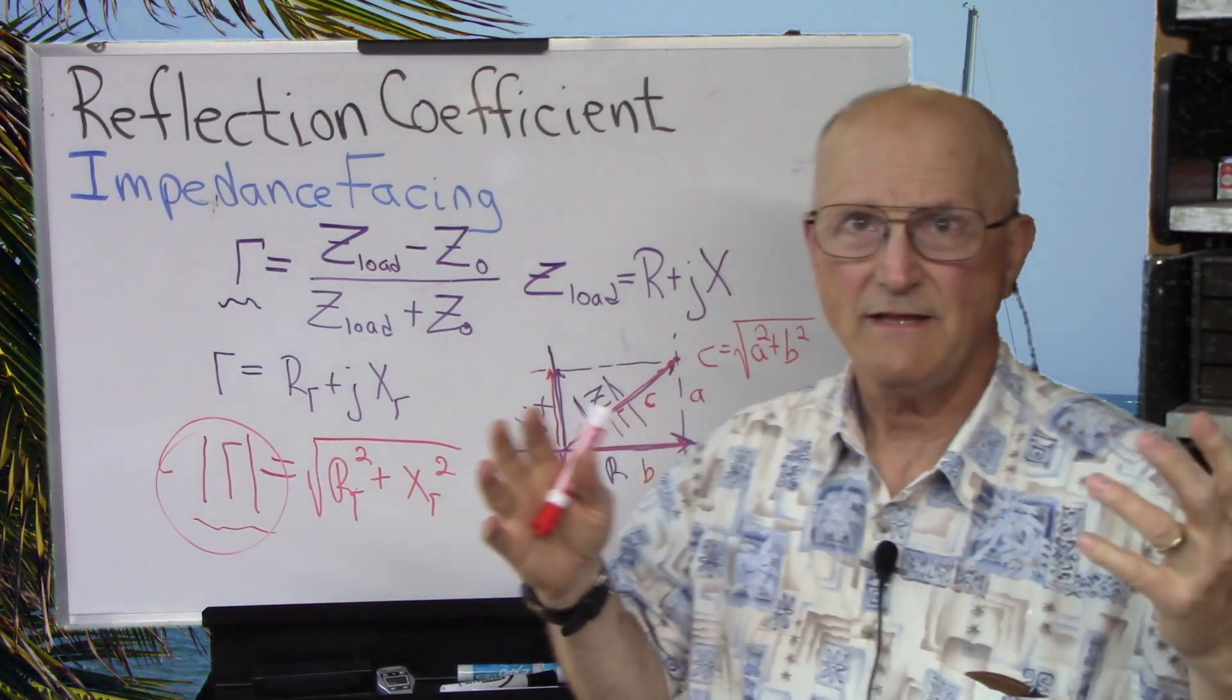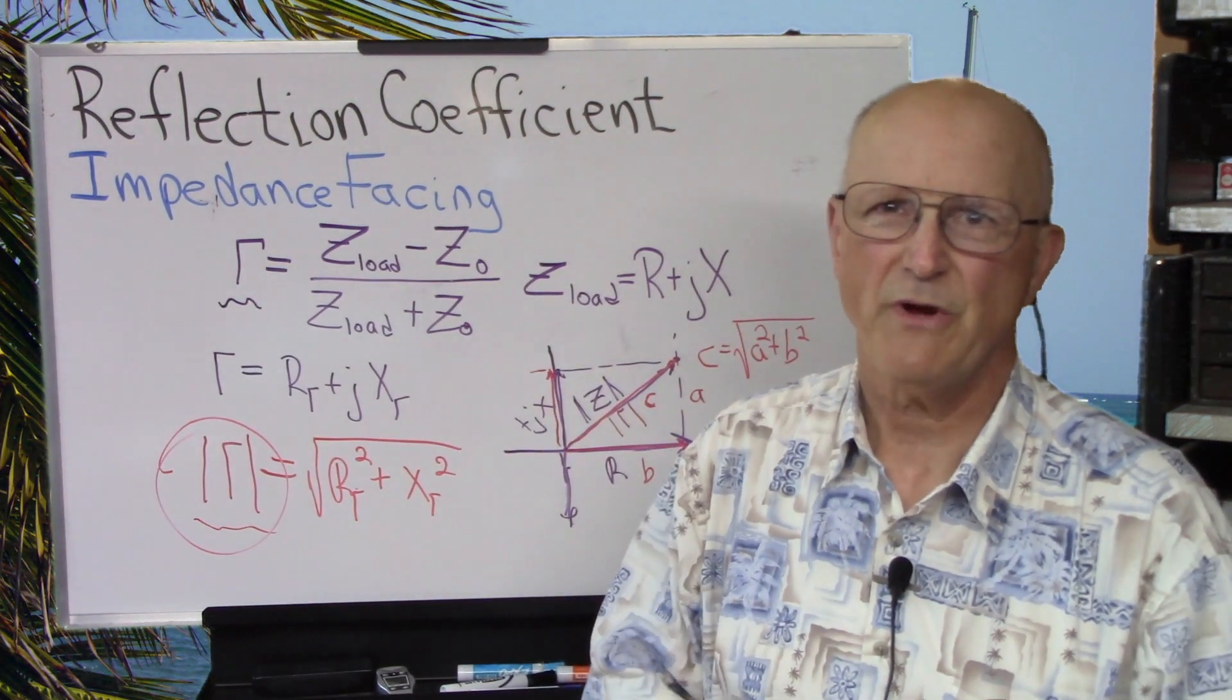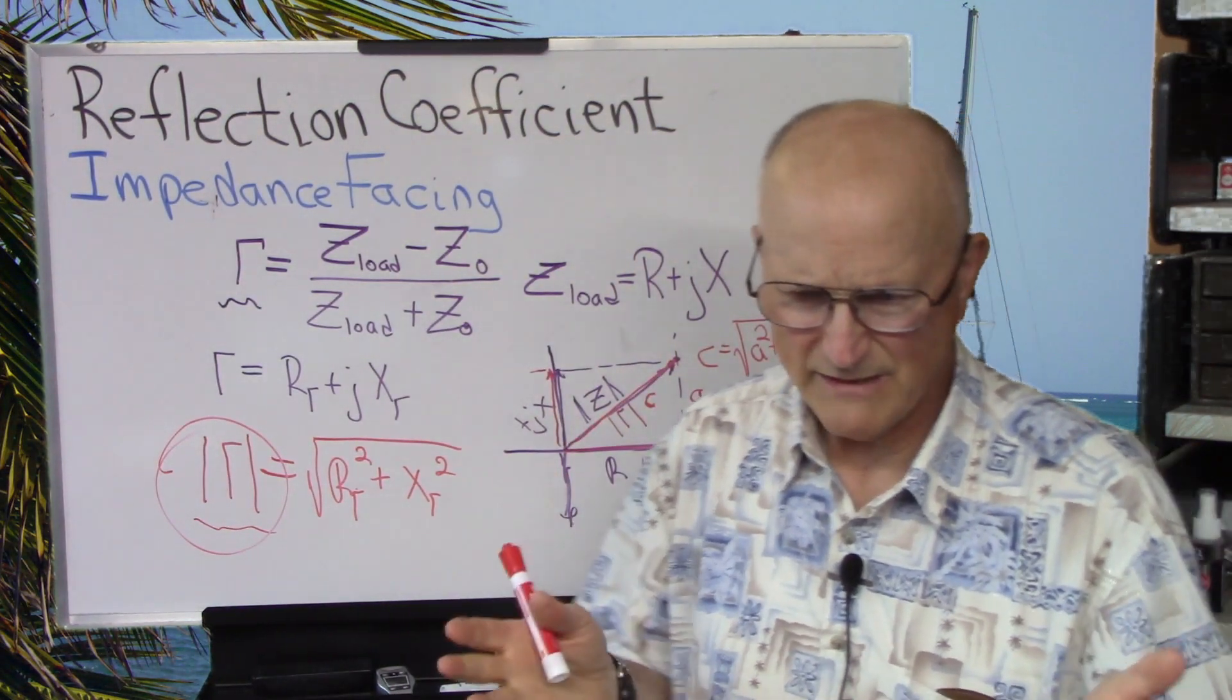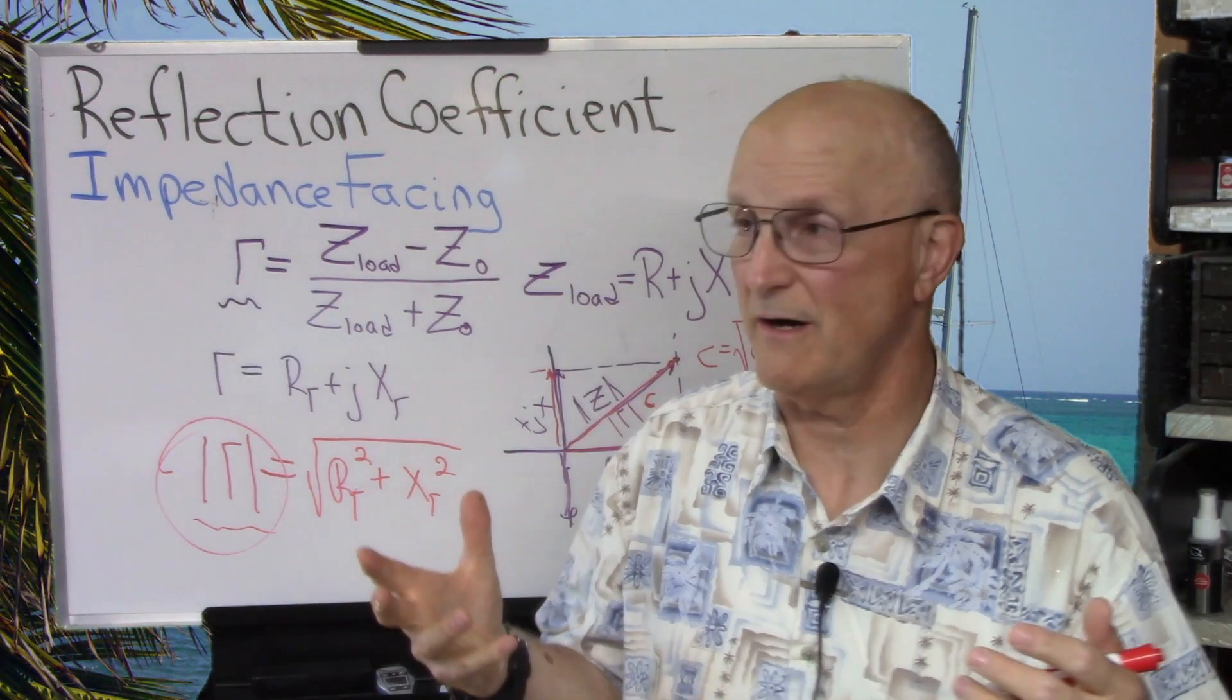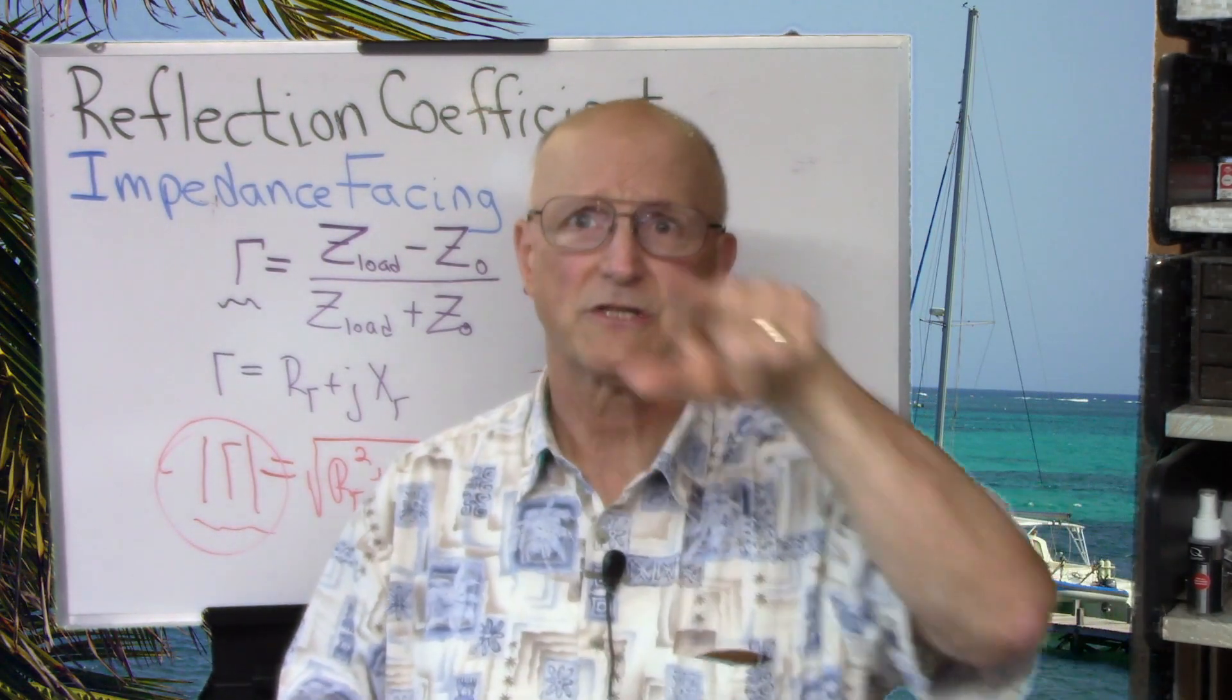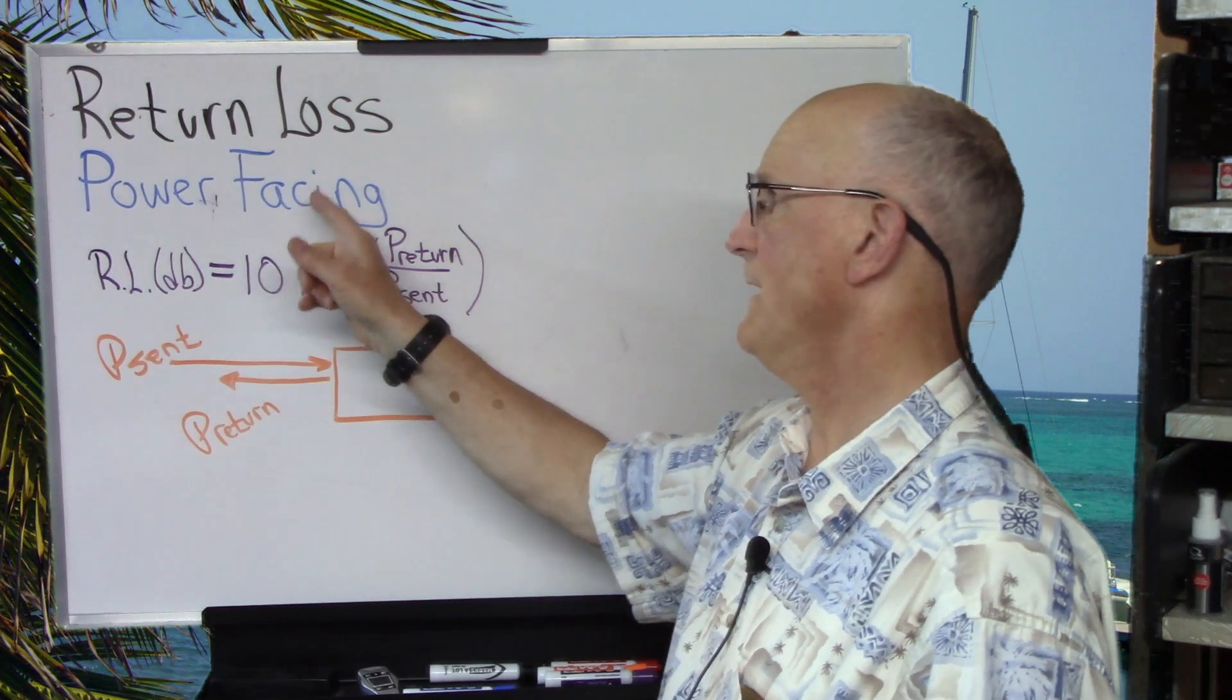So, understanding these next two entities, return loss and VSWR, they're not strictly required in order to use a Smith chart. But, because they're so closely related to the reflection coefficient and because we talk about SWR, in fact, when we do our tour of the Smith chart, we're going to be talking about an SWR circle on the Smith chart. And so, now let's get into return loss, which is the power facing entity.